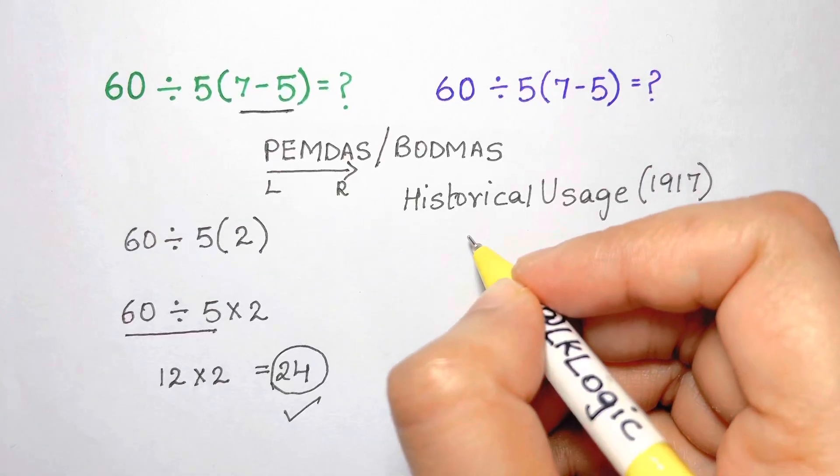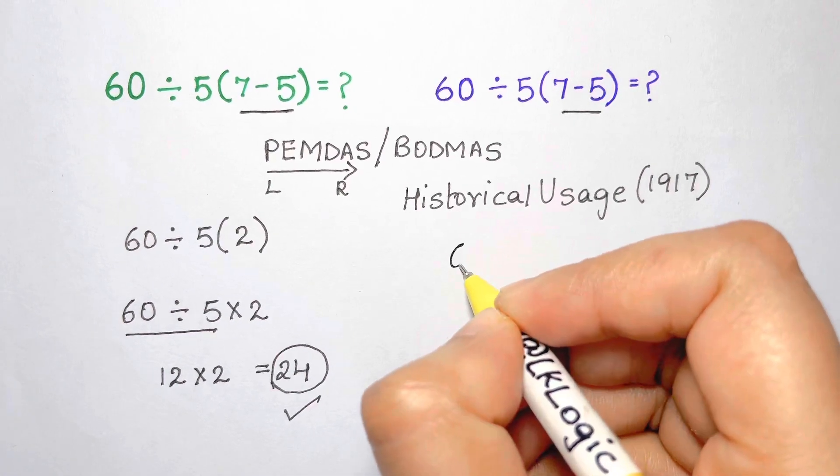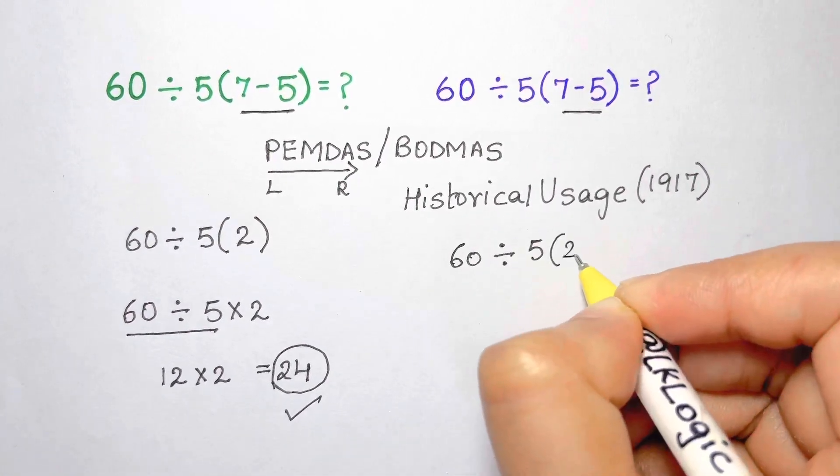The first part is the same as before. We will still evaluate the parenthesis first. 7 minus 5 equals 2. The question is what to do next.